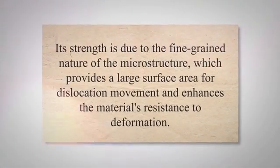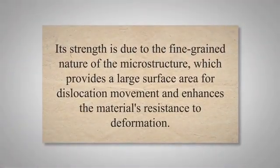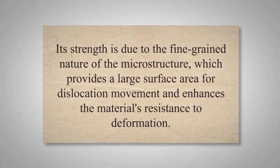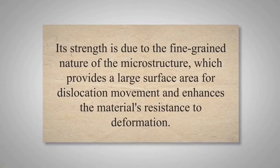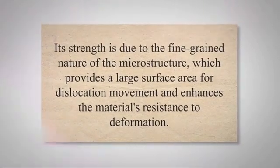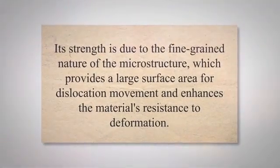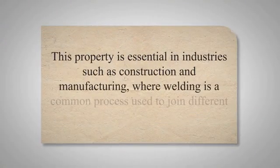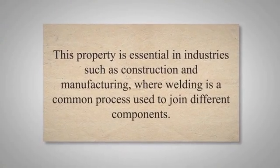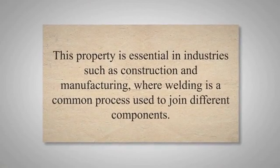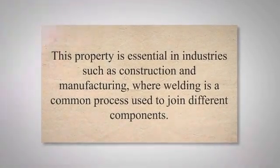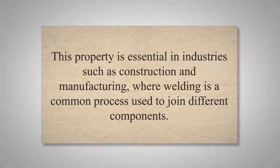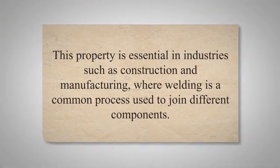Another important property of acicular ferrite is its high strength, which makes it an ideal material for use in structural components. Its strength is due to the fine-grained nature of the microstructure, which provides a large surface area for dislocation movement and enhances the material's resistance to deformation. In addition, acicular ferrite also has good weldability, which makes it easy to join with other materials. This property is essential in industries such as construction and manufacturing, where welding is a common process used to join different components.